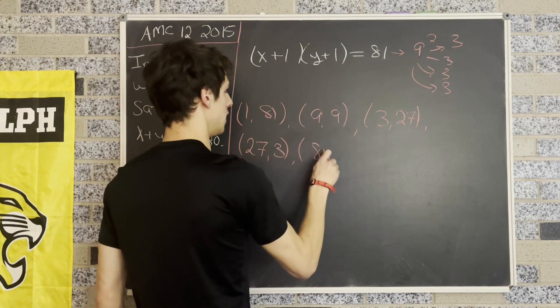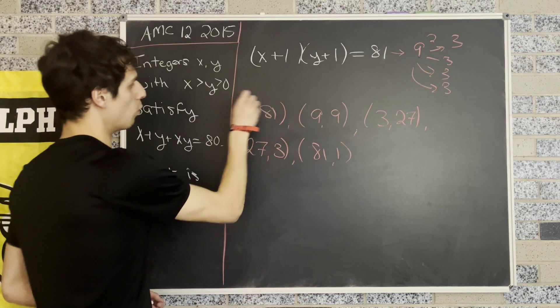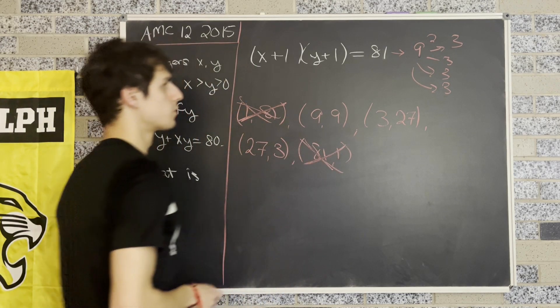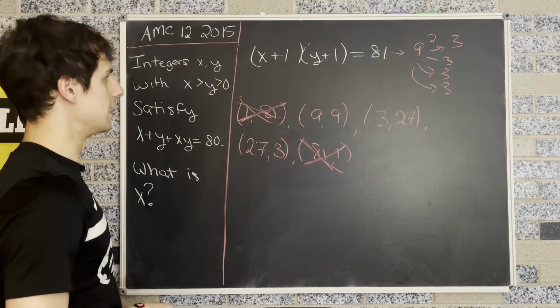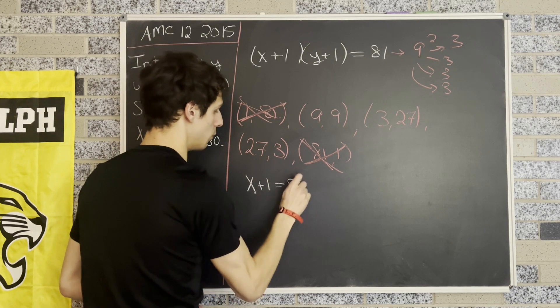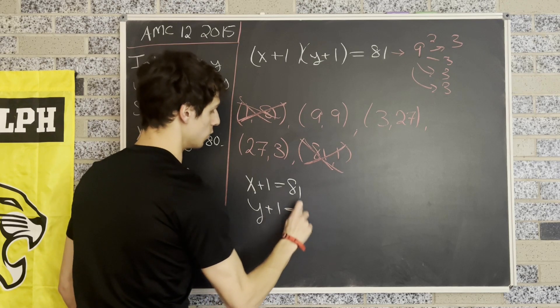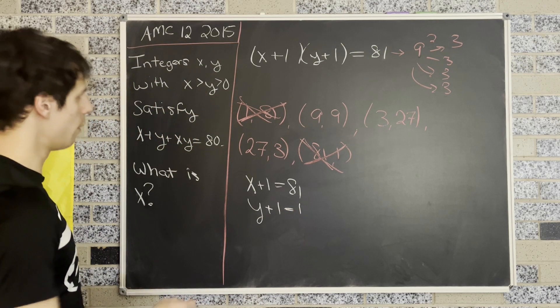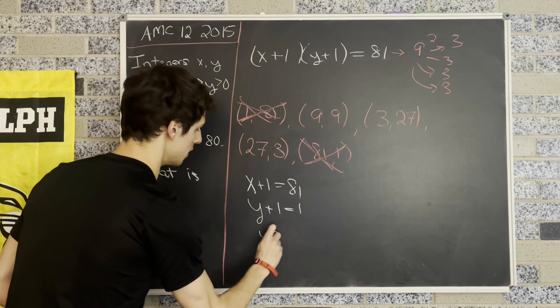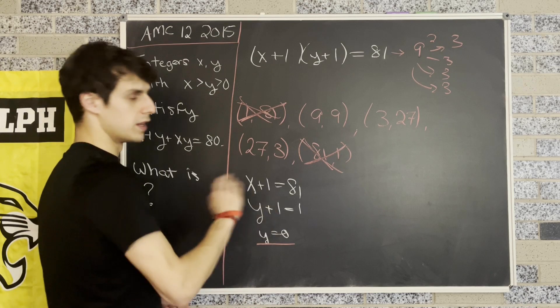But notice right away that we can get rid of our 1, 81 and our 81, 1 terms. And you might say, why is that the case? Well, if we let this term be 81, then we have x plus 1 equals 81. And this term has to be 1. y plus 1 is equal to 1. However, we stipulated up here that x and y both have to be bigger than 0. And in this case, we have that y is equal to 0. So this doesn't work.